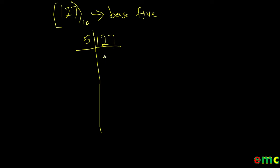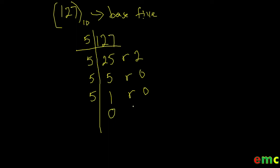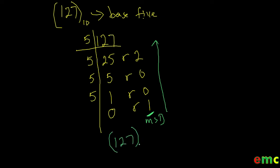127 divided by 5 gives 25 remainder 2; 25 divided by 5 gives 5 remainder 0; 5 divided by 5 gives 1 remainder 0. Then 1 divided by 5 is not possible, so we replace it with 0 and bring down our 1, which is our most significant digit. We start writing our number from the bottom up. Therefore, 127 in base 10 is equal to 10002 in base 5.